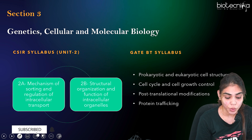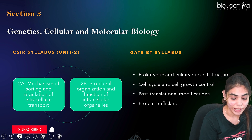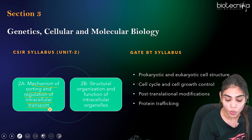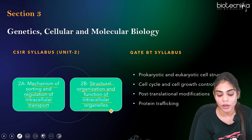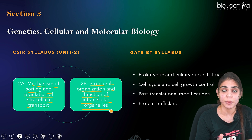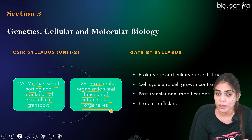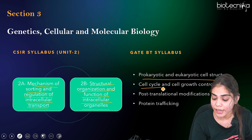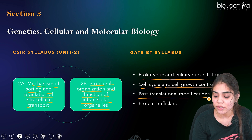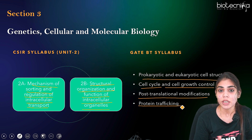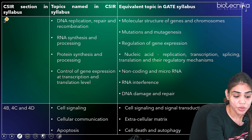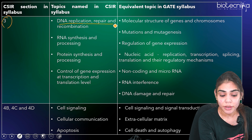Coming to Section 3, which deals with Genetics, Cellular, and Molecular Biology: CSIR Unit 2 includes protein sorting and translation mechanism, mechanism of sorting and regulation of intracellular transport, as well as the 2B part on structural organization and function of intracellular organelles. These are equivalent to topics such as prokaryotic and eukaryotic cell structure, cell cycle and cell growth control with different checkpoints, post-translational modification, as well as protein trafficking under GATE Biotechnology syllabus.